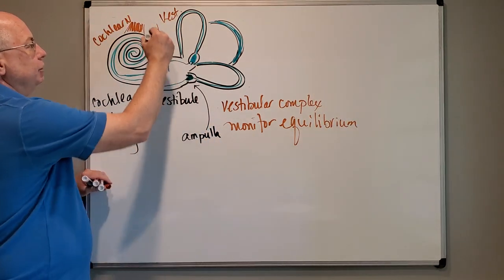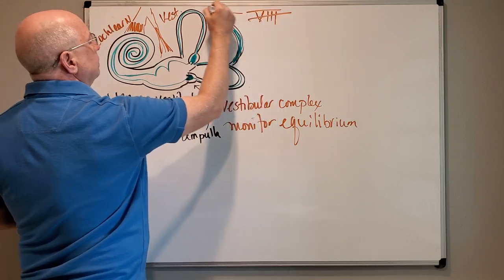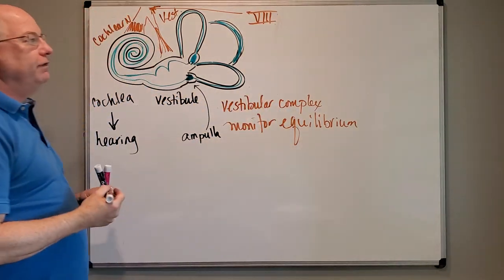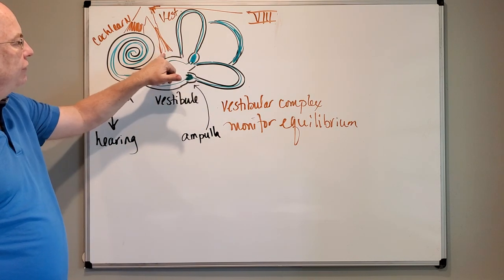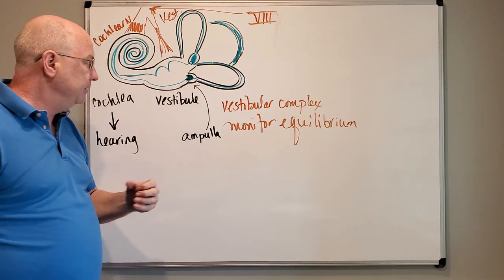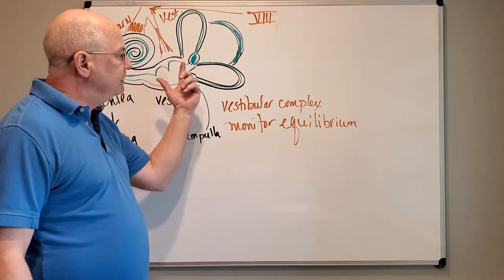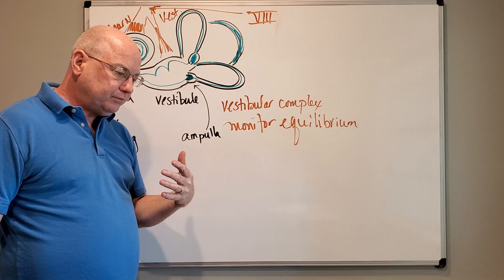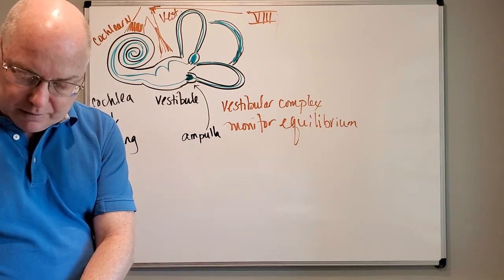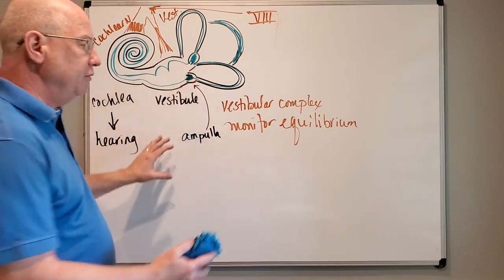These two nerves fuse together to form cranial nerve number eight, the vestibulocochlear nerve. Because the cochlea does hearing, if I damage the cochlear nerve, I lose some of my sense of hearing. If I damage the vestibular nerve or its branches, I might lose some of my equilibrium. Some diseases damage the vestibular nerve or these structures, causing loss of equilibrium. Now in your note set it talks about all of this and the semicircular canals. I want to focus on them first and then we'll do the utricle and saccule.